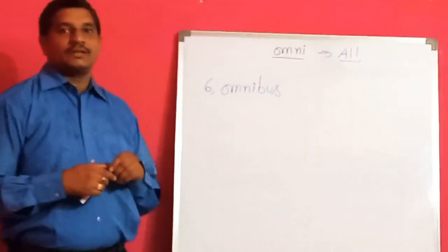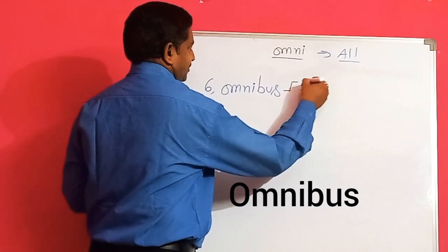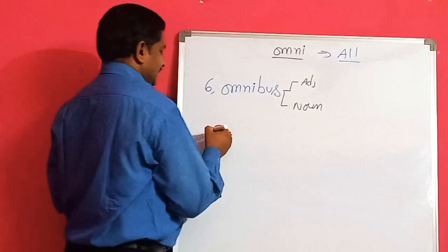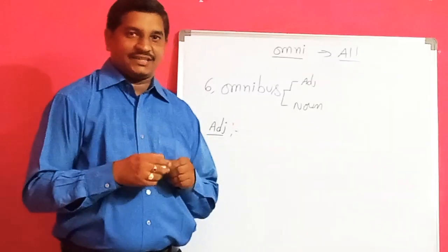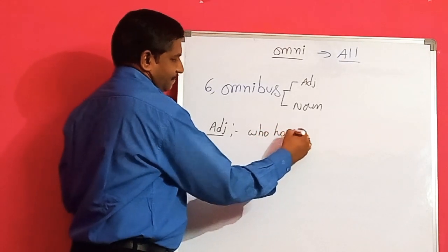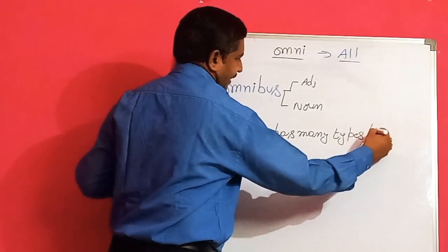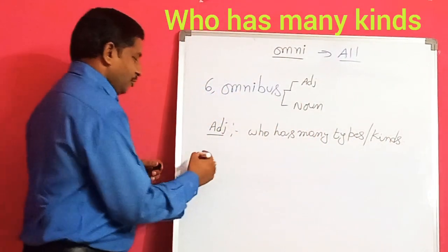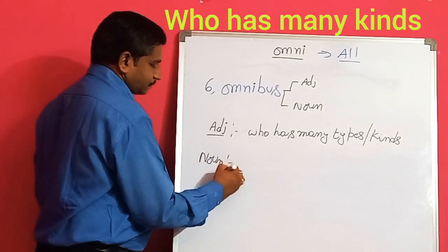One more word is there, very important. We can look further: omnibus. We use it as an adjective and as a noun, with two meanings. In exams we have to remember whether it is an adjective or a noun. The adjective means who has many types or many kinds.